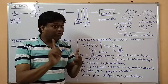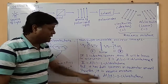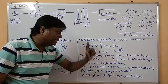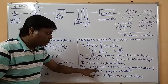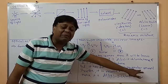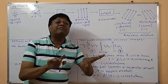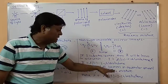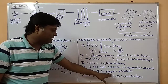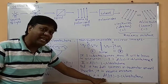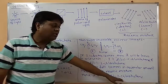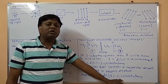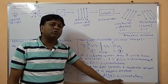Since we have both dextro and levo isomers together, we can call it a racemic mixture — because a racemic mixture has both isomers present in equimolar amounts, that is 50-50%. This racemic mixture is named DL or (±) 2-chlorobutane. This is about the optical activity of 2-chlorobutane.